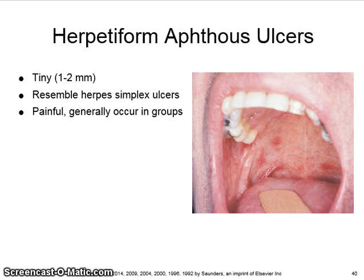Herpetiform apthous ulcers, also known as herpetiform aphthae, are tiny — one to two millimeters in size — and very similar in appearance to herpes simplex ulcers. They are painful and generally occur in groups.